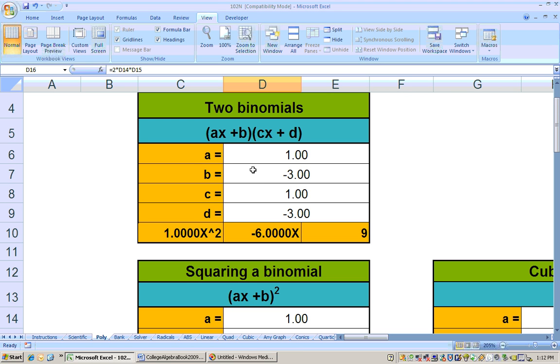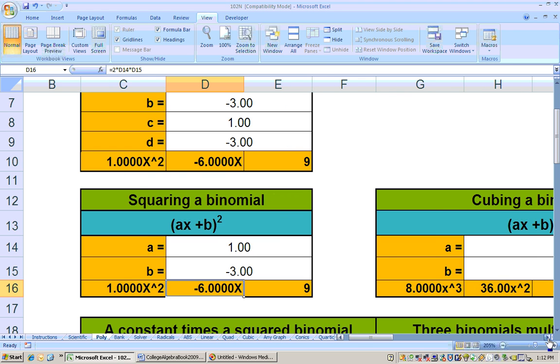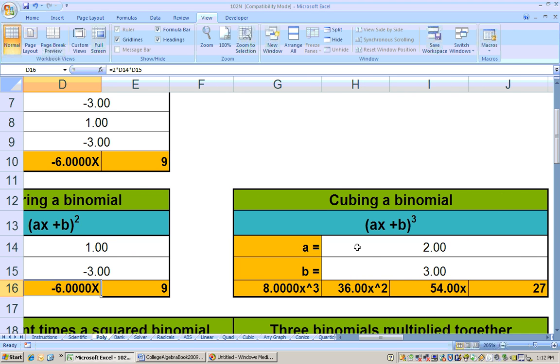But we could use this if we were multiplying two binomials that were different together. If you're cubing a binomial, let's say we had 2x minus 4 cubed. Well, that'd be 2, and then minus 4, and it works it out here for you. 2x minus 4 cubed. 2x minus 4, that quantity cubed by hand, would take 2x minus 4 times 2x minus 4, get that answer, and then take the next 2x minus 4 and distribute it through. So this is a lot less evil than doing it all by hand.